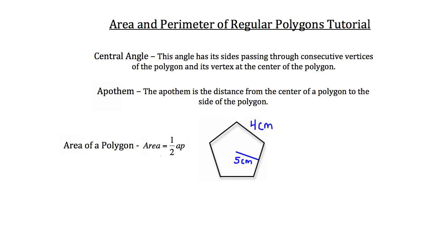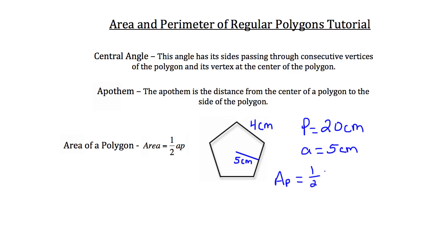You would just use the formula: area equals one half times apothem times perimeter. Since there are five sides to this pentagon and each side has a length of four centimeters, the total perimeter is 20 centimeters. The apothem had a length of five centimeters. So the area equals one half times five times 20. Five times 20 is 100, and one half of 100 is 50. So the area of this pentagon is 50 centimeters squared.